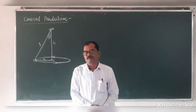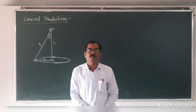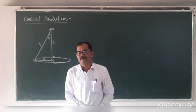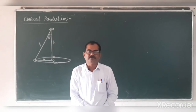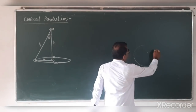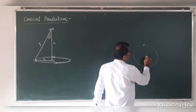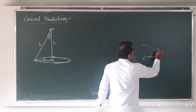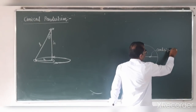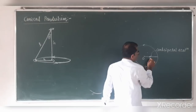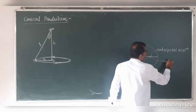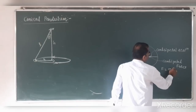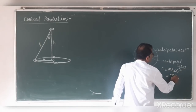In the previous lecture we studied centripetal acceleration, where we saw that when a particle or body is performing circular motion, there is an acceleration acting towards the center called centripetal acceleration. For uniform circular motion, this centripetal force acts along the radius towards the center, and is given by F equal to mR omega squared, or mv squared upon R.